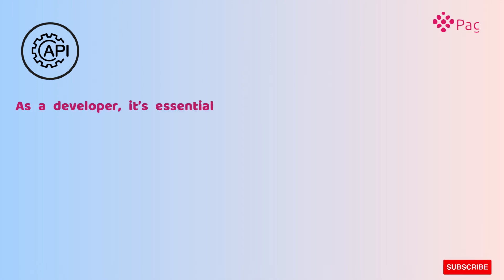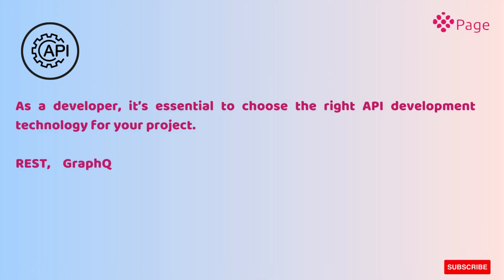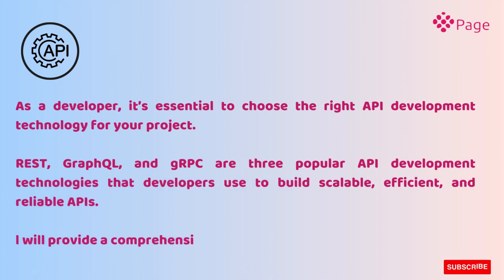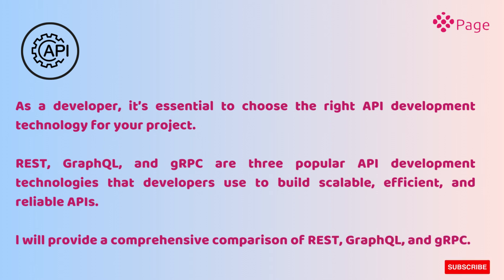As a developer, it's essential to choose the right API development technology for your project. REST, GraphQL, and gRPC are three popular API development technologies that developers use to build scalable, efficient, and reliable APIs. This video will provide a comprehensive comparison of REST, GraphQL, and gRPC.